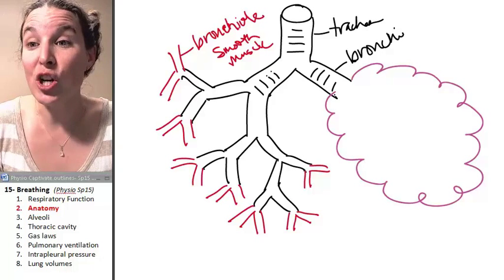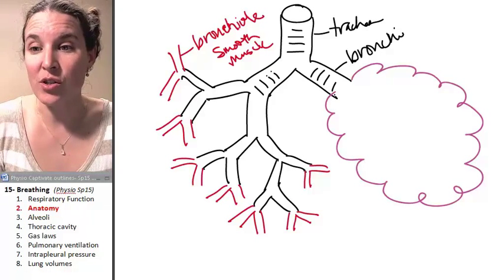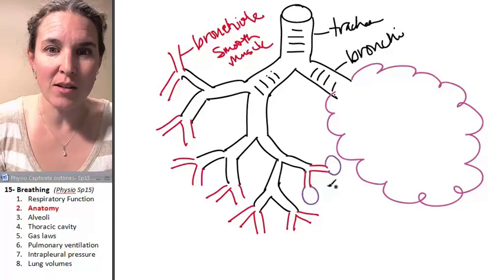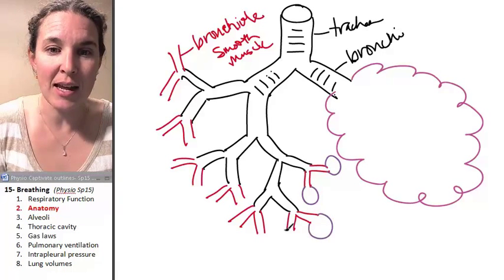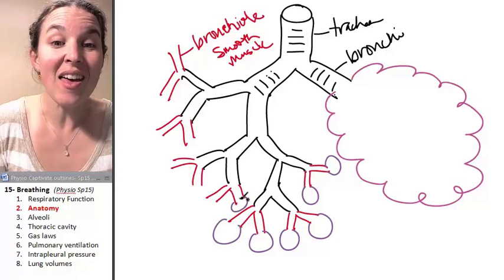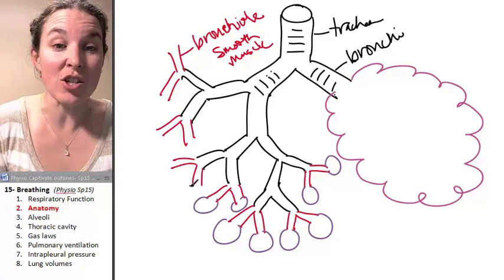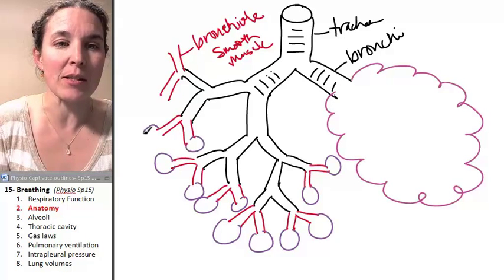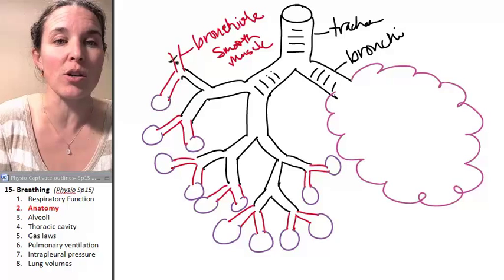The bronchioles terminate in structures called alveoli. We're going to talk about the structure of these guys in the next section. Alveoli—this is where gas exchange occurs. This is where the magic actually happens. It's important to understand the structure of the alveoli.